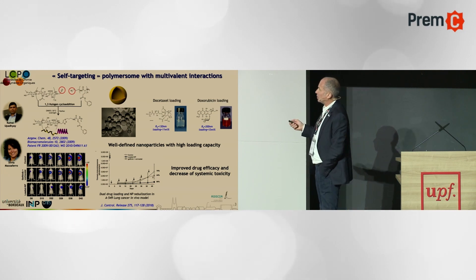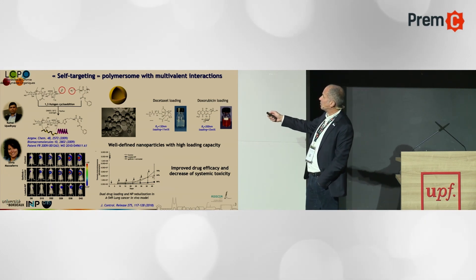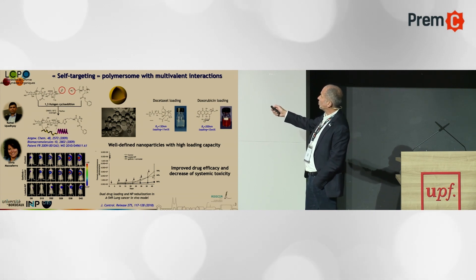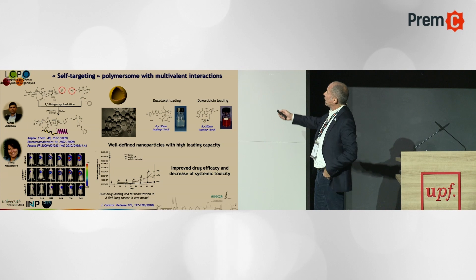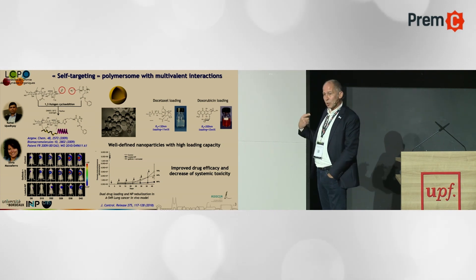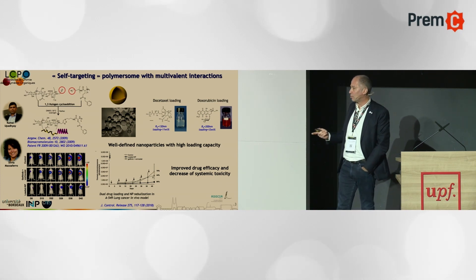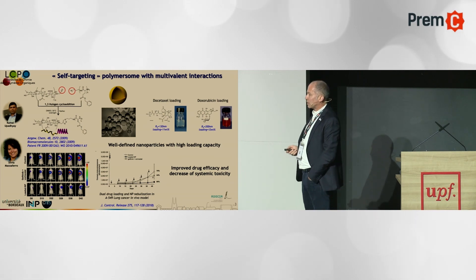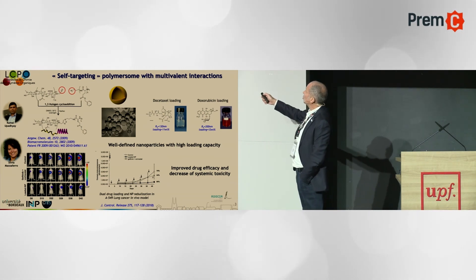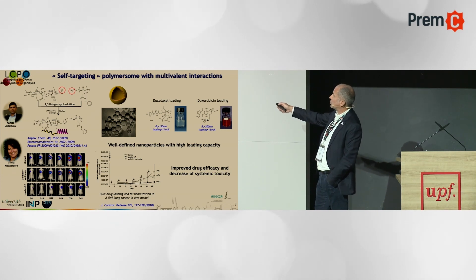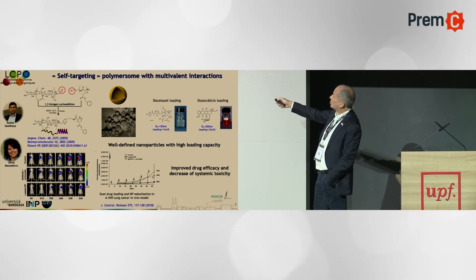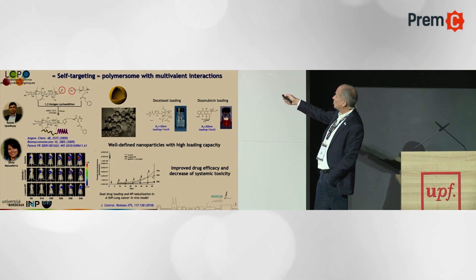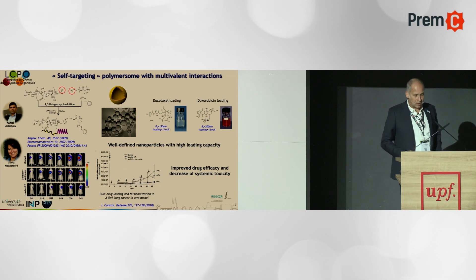One key result with this system: we used a cocktail treatment — two drugs in the same carrier delivered simultaneously — in a lung cancer model that overexpresses CD44. CD44 is known to interact with hyaluronic acid, so HA is a ligand for this receptor overexpressed in lung cancer cells. We demonstrated improved treatment by cocktail therapy using polymersomes: tumor growth is clearly inhibited compared to free drugs injected systemically, showing enhanced tumor inhibition activity using this approach.